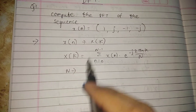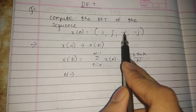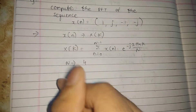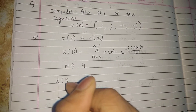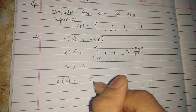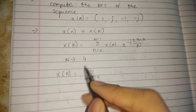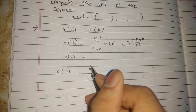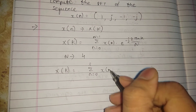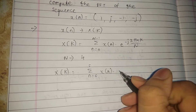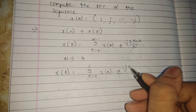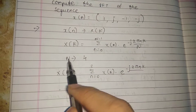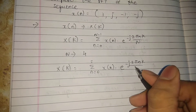N is the length of the sequence. Counting 1, 2, 3, 4 — the length of the sequence is 4. So N is 4. Now I will write X of k equals summation of n equals 0 to N minus 1, that is 4 minus 1, which means 3, of X of n e raised to minus j 2 pi n k upon N, that is 4.